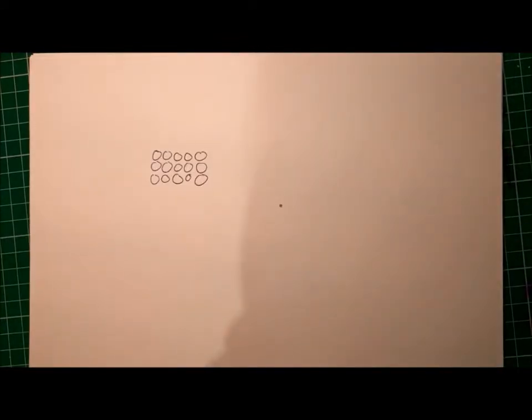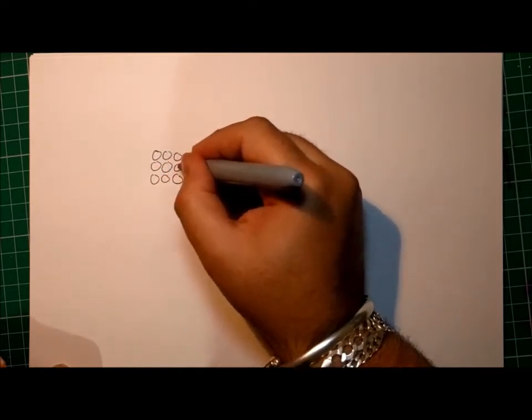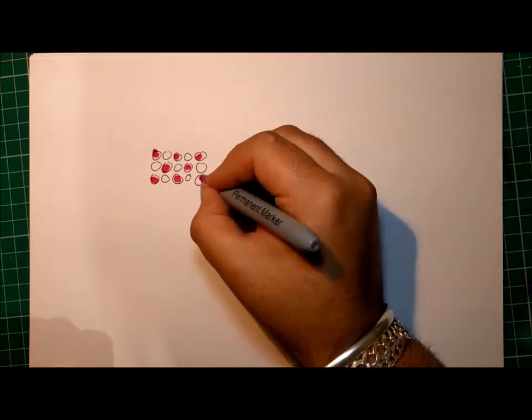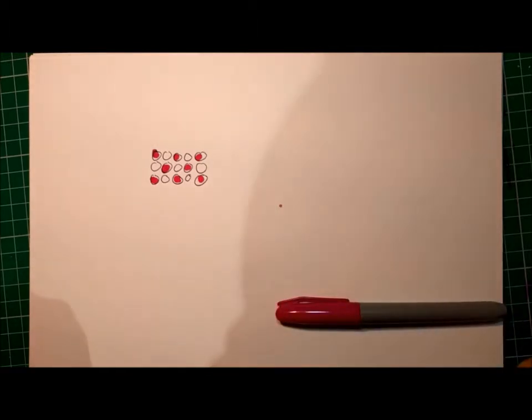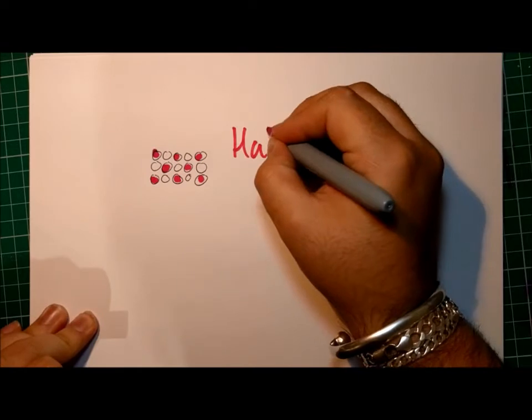Radioactive decay is an entirely random process. You cannot predict which nucleus in a sample will decay next, but you can predict how long it will take for half of the nuclei in a sample to decay. The time it takes for half of the nuclei in a sample to decay is known as the half-life of a sample.